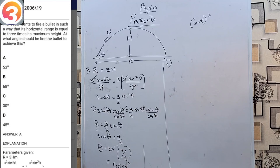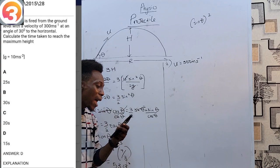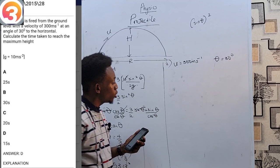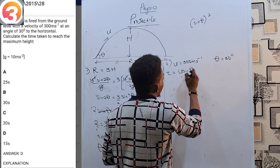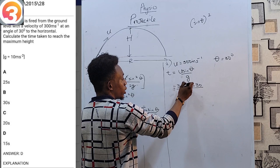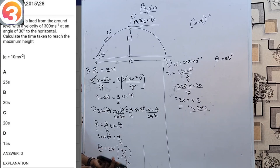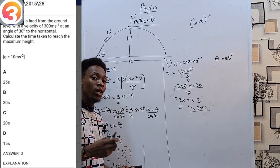Example two (from 2015, question 28): a projectile is fired from ground level with a velocity of 300 m/s at an angle of 30° to the horizontal. Find the time taken to reach maximum height. Using t = u sinθ / g: t = 300 × sin30° / 10 = 300 × 0.5 / 10 = 15 seconds. That is option D. This reminds us why familiarity with trigonometry — especially special angles — is important.